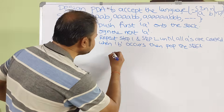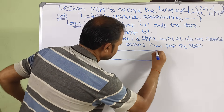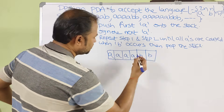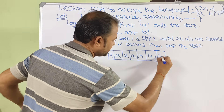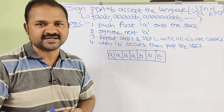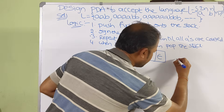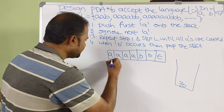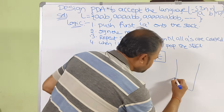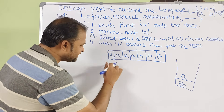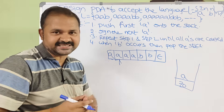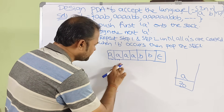Let us take the string with 4 A's followed by 2 B's. Initially the stack is empty and the read head is at the 1st A. For the 1st A, we push it onto the stack. Next, the read head is at the 2nd A — we ignore the 2nd A, meaning we don't perform any operation on the stack; keep its content as it is.